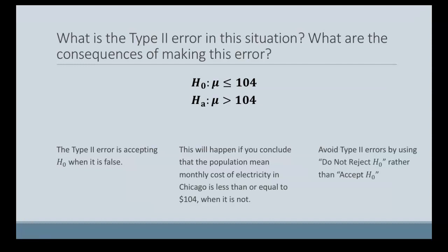So we can avoid these Type II errors by using the phrasing 'do not reject the null hypothesis' rather than saying 'accept the null hypothesis,' so we never ever want to say that we accept the null.